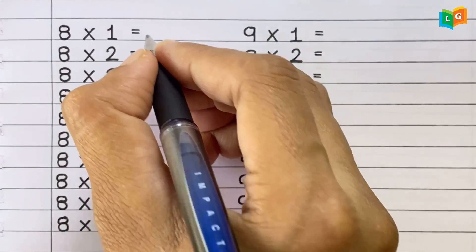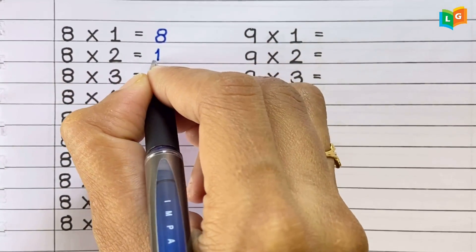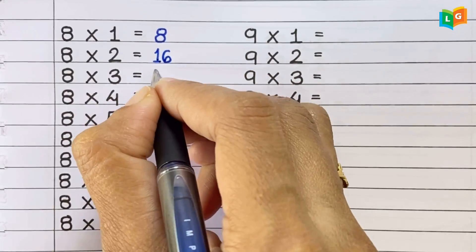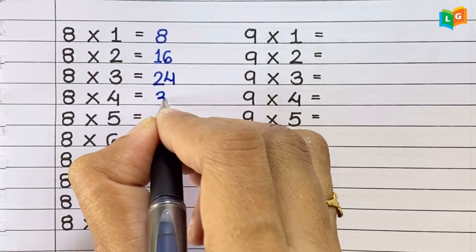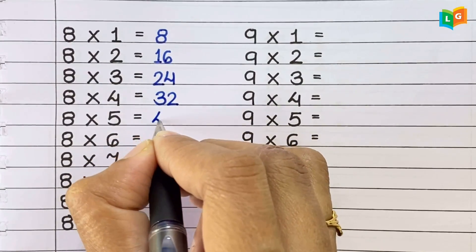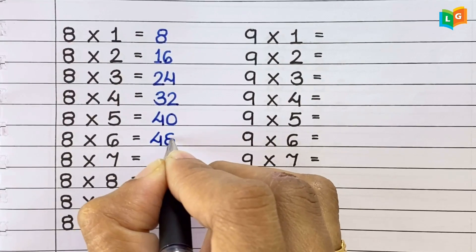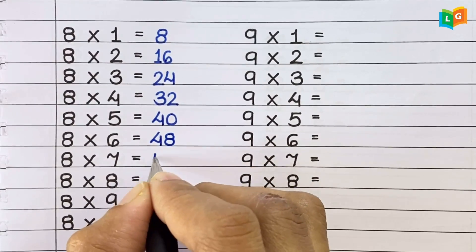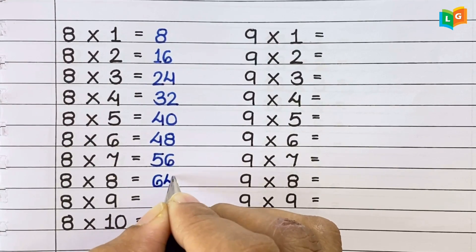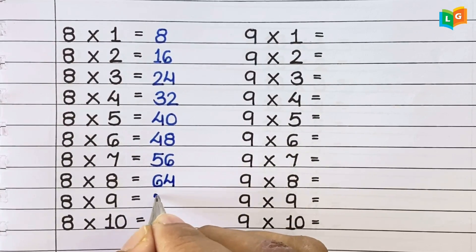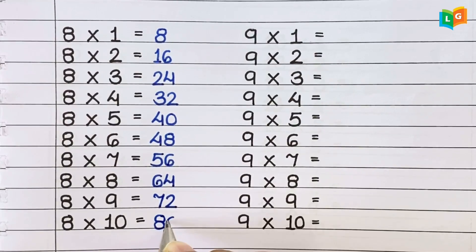Now let's see table of 8. 8 1s are 8, 8 2s are 16, 8 3s are 24, 8 4s are 32, 8 5s are 40, 8 6s are 48, 8 7s are 56, 8 8s are 64, 8 9s are 72, 8 10s are 80.